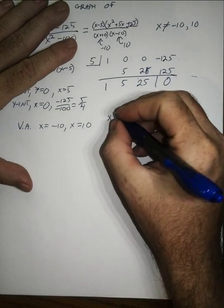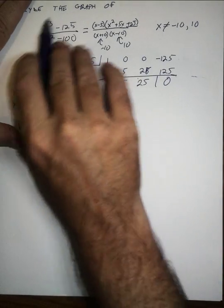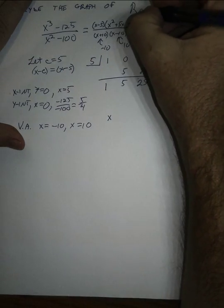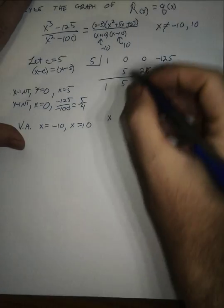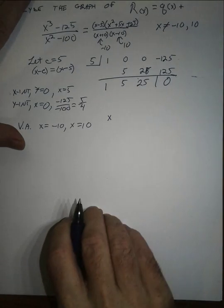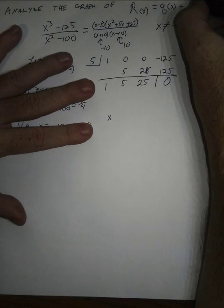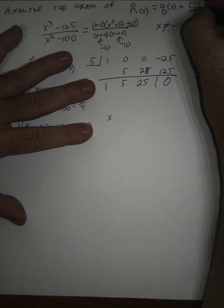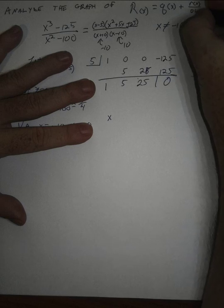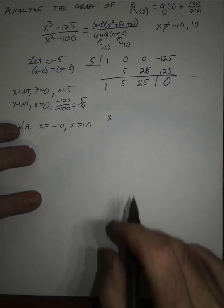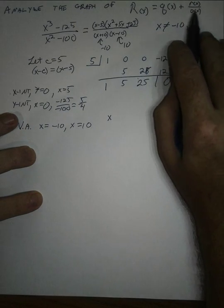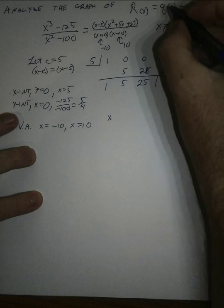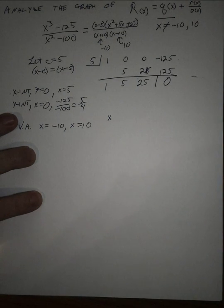We're going to rewrite r(x) as a polynomial plus a residual rational function — that's the remainder over the denominator. The denominator will be of higher degree than the remainder, so for large values of x the residual goes to zero and the function looks like the polynomial line we're left with. We want to find the equation of that line.